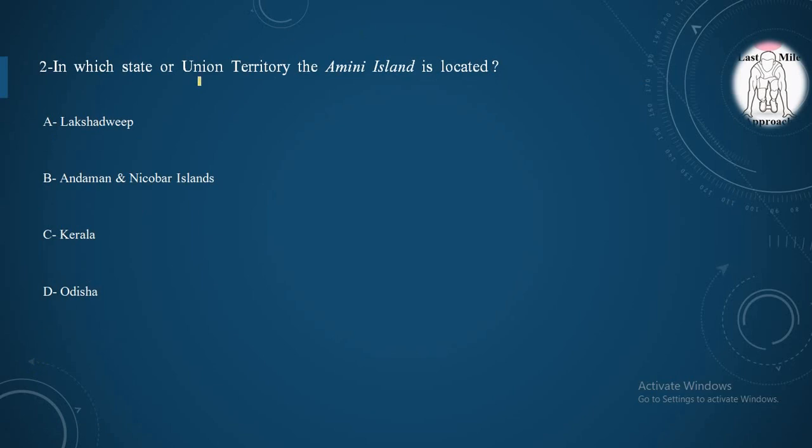Moving to our second question: In which state or union territory is the Amini Island located? Option A: Lakshadweep, Option B: Andaman and Nicobar Islands, Option C: Kerala, Option D: Odisha. And the correct option is option A, Lakshadweep, where the Amini Island is located.